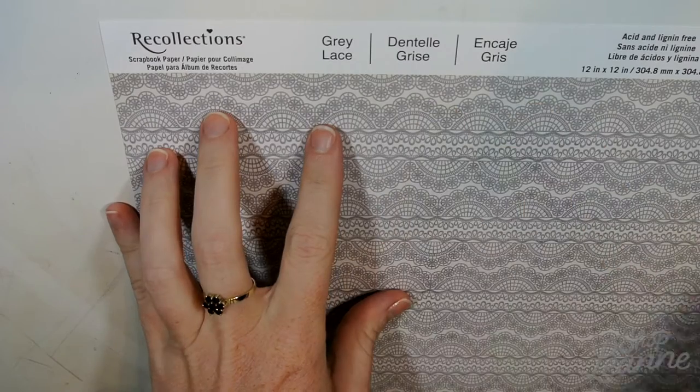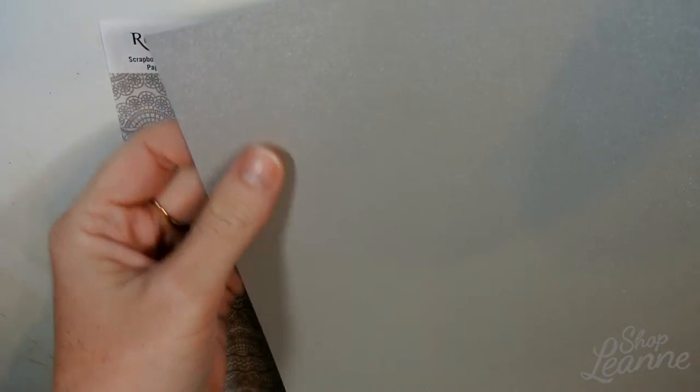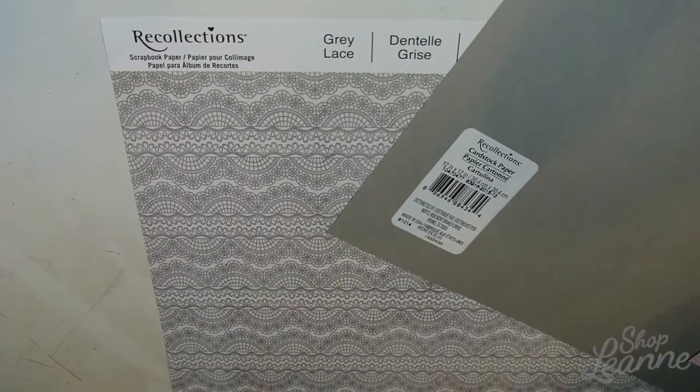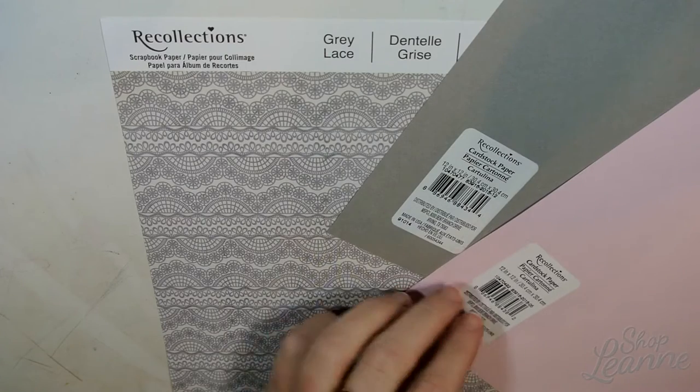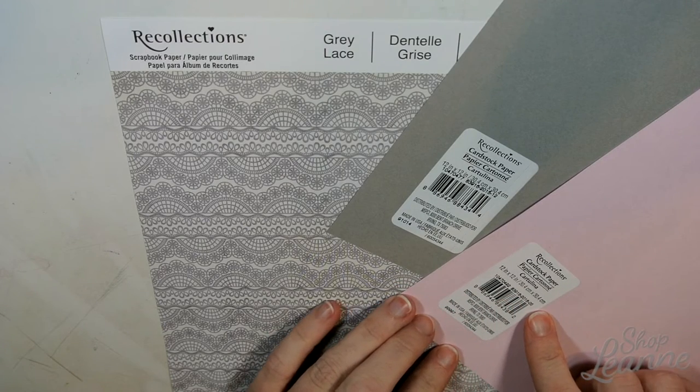To begin, I'm using the gray lace piece of Recollections paper from Michaels, a dark gray iridescent paper, and pink linen—these are all from Michaels.